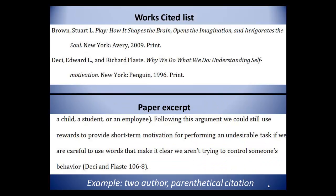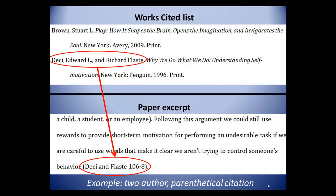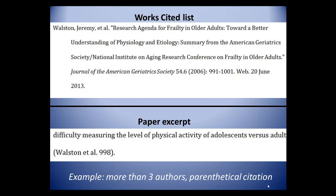If the source you reference has two or three authors, include every author's last name. List them in the same order as you did in your Works Cited entry, but use only their last names. If the source has more than three authors, list them as you did in the Works Cited entry, which in this case should be the first author followed by the phrase 'et al.'